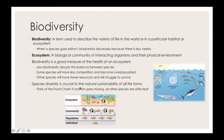Species diversity is crucial to the natural sustainability of all life forms because we're all interconnected. Whether at the individual level, the population level, community, or the ecosystem level, species are always interacting with each other even indirectly. If one is disrupted, it usually causes a domino or ripple effect to all the others.